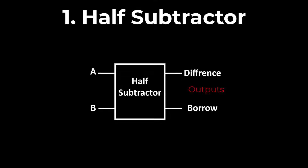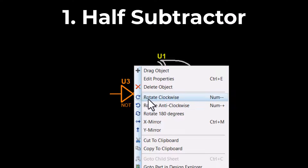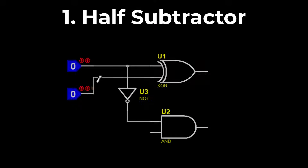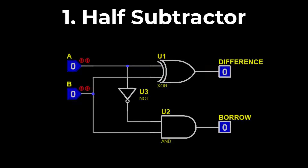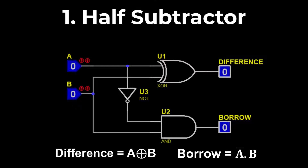The half subtractor is designed by combining an XOR gate, AND gate, and NOT gate. Input A of both gates is connected through a NOT gate, and input B is connected directly. The XOR gate produces the subtraction of the inputs, and the AND gate produces the borrow out. The boolean expressions are: Difference = A XOR B, and Borrow = (NOT A) · B.